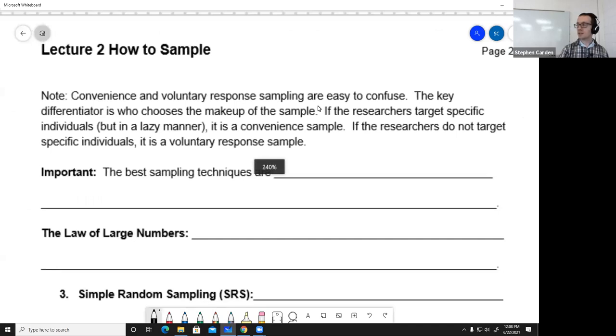If you see something that comes from a voluntary response sample, don't believe it. You have no guarantee that it's representative of a larger population. It's very likely to be heavily biased. The top of page two, just a note: convenience and voluntary response are so similar they're easy to confuse. If the researcher targets specific individuals, they just don't do the due diligence they should, then it's a convenience sample. If they're not targeting specific individuals and it's just whoever wants to be in the sample can be, then you call it voluntary response.